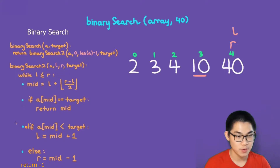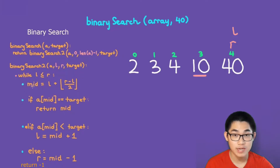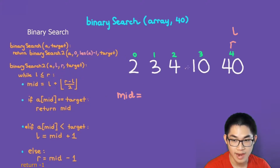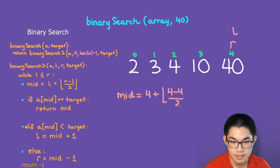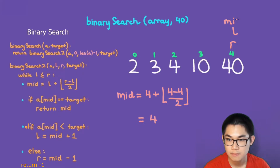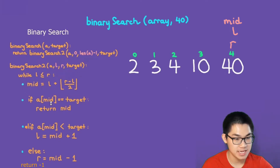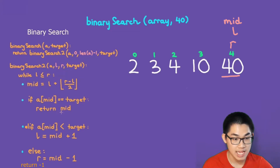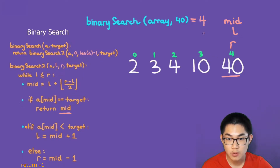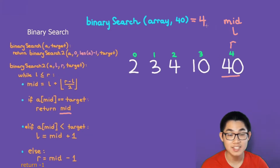We repeat this process. Is left smaller or equal to right? Yes. We calculate mid: L is at 4, so mid equals 4 plus floor of (4 minus 4) over 2, which is 0. Mid is at index 4. Checking the first case: array at mid is 40. Is 40 equal to the target 40? Yes! So all we do is return mid. We found number 40 at index 4. This completes the binary search.